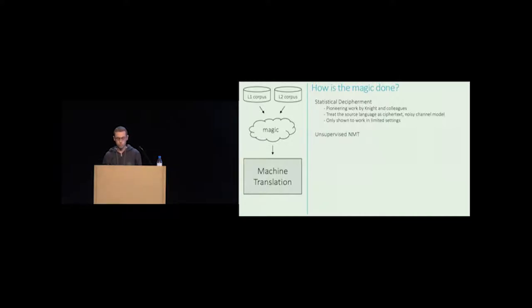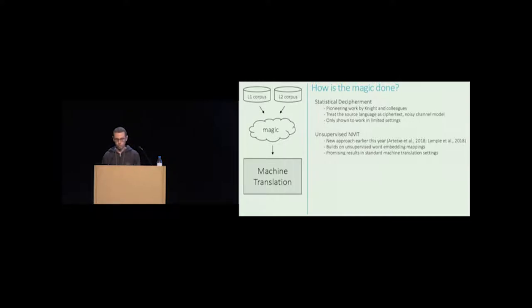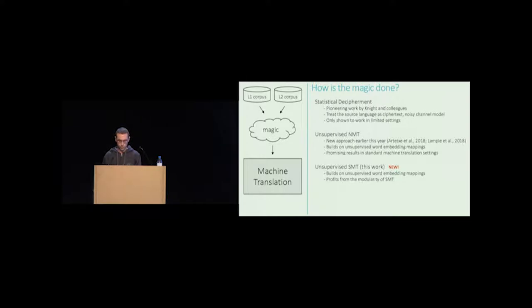More recently — and when I say more recently, I mean this year — two papers by Lample et al. and our group proposed a new approach for this problem based on NMT that builds on the recent work on unsupervised word embedding mappings. This new approach obtains promising results in more standard large-scale machine translation settings. But in this paper we propose another approach that also builds on unsupervised embedding mappings but profits from the modular architecture of SMT, obtaining gains of 7 to 10 BLEU points over the previous NMT-based approach.